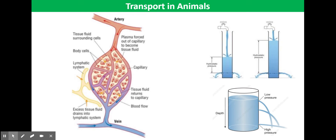When an artery reaches the tissues it branches into smaller arterioles and then into a network of capillaries. These eventually link up with venules to carry blood back to the veins. Therefore, blood flowing into an organ or tissue is contained in the capillaries.